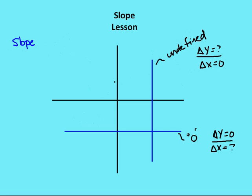Let's talk about what happens when we have vertical and horizontal lines. If we have a horizontal line, the value of the y component never changes. The equation for the line is y equals some value — in this case it looks like about negative 4, so y equals negative 4. The y value never changes, x can be whatever, so the change in y is 0. The change in x is some value, so the slope is always 0, because 0 divided by any number equals 0.